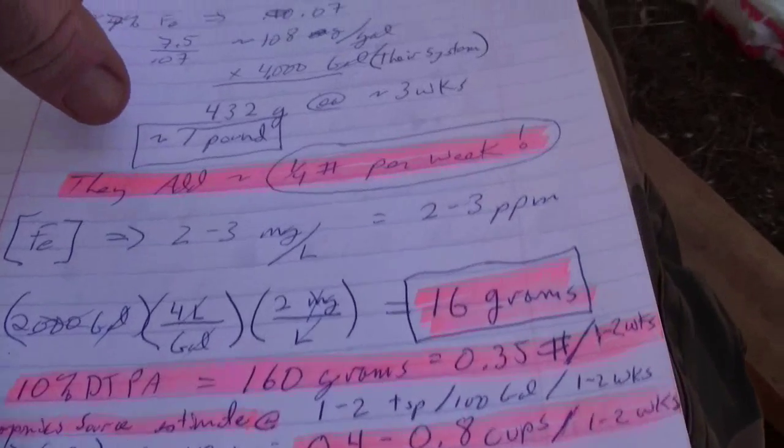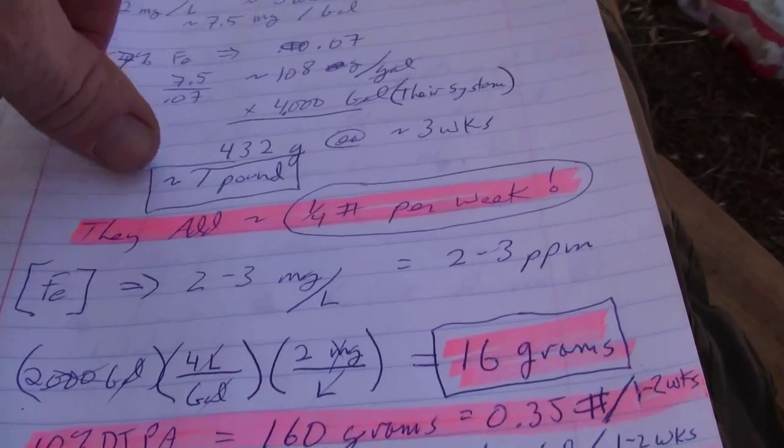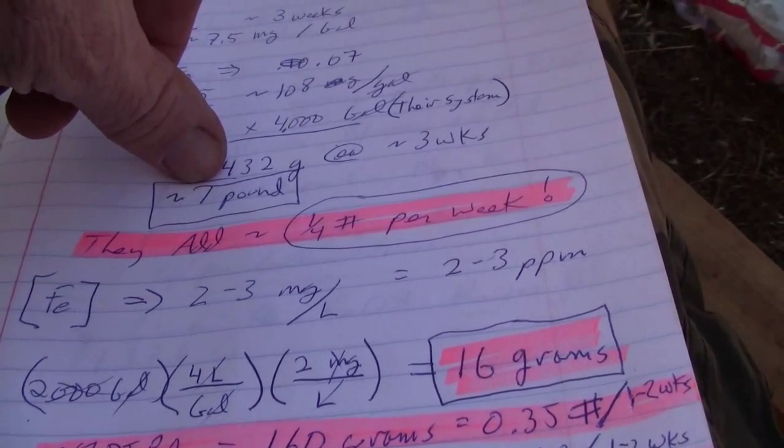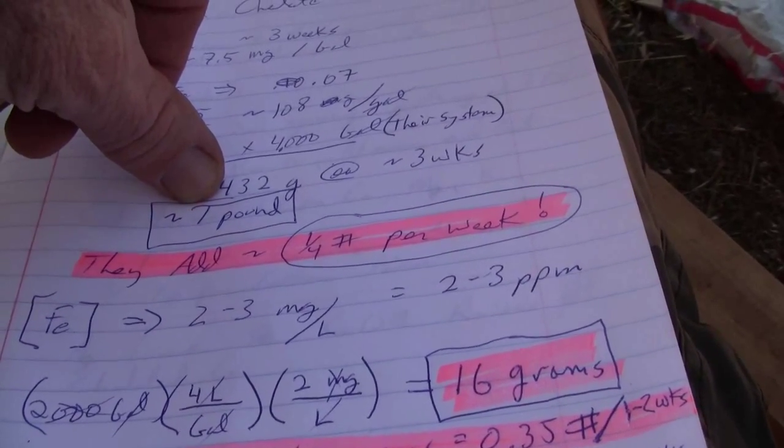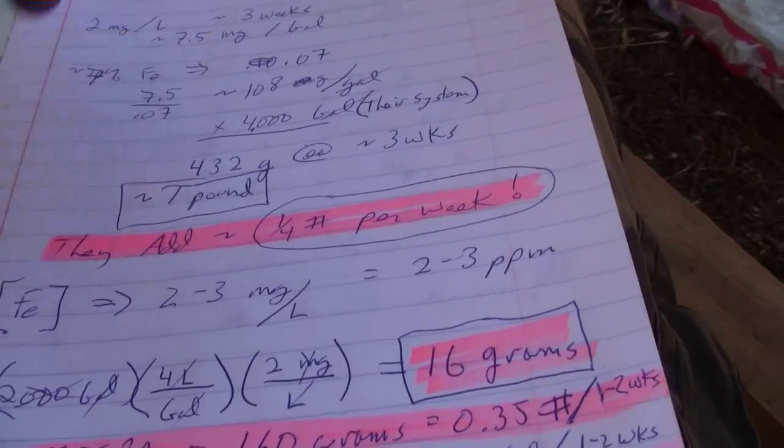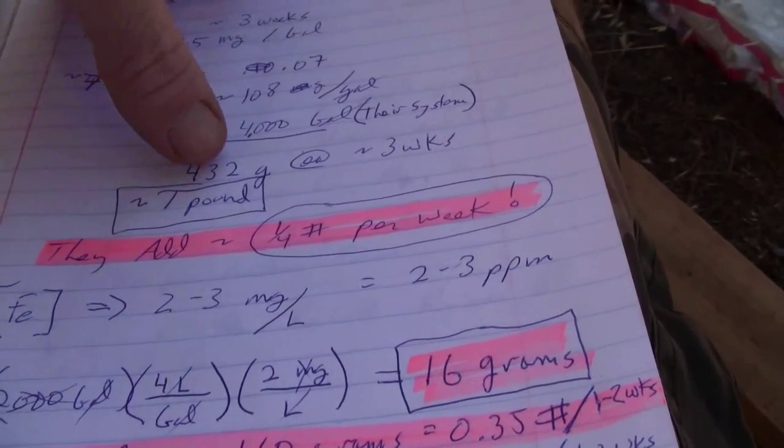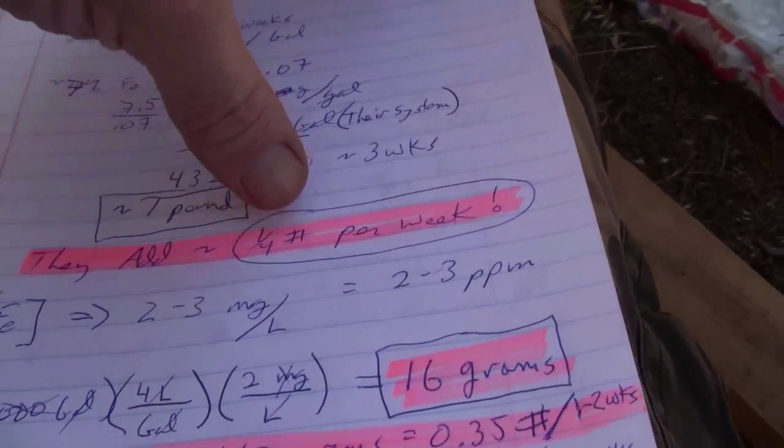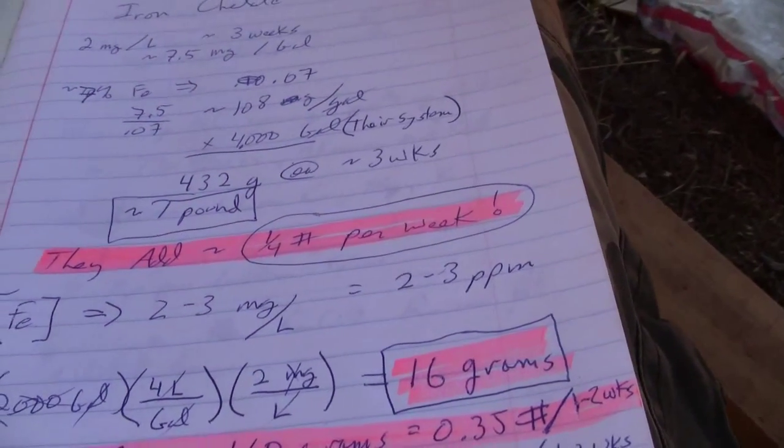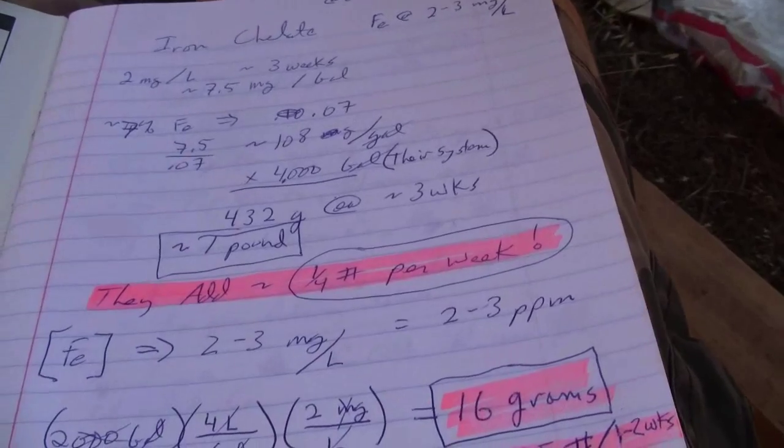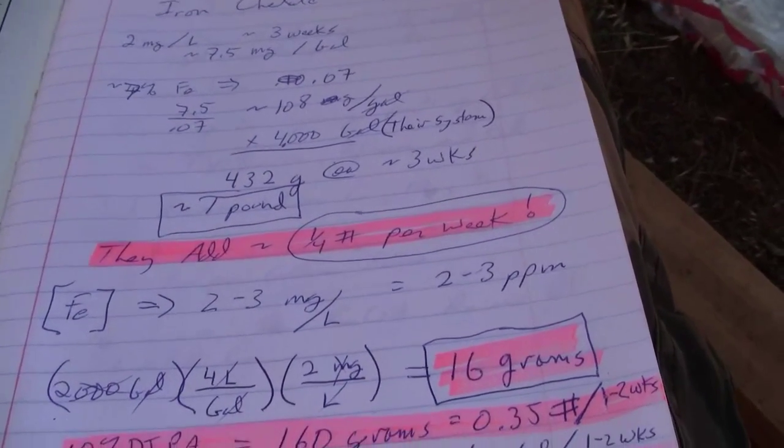Interestingly, using Aquaponics Source's estimation gets me the amount that Bright Agrotech actually adds to a system that's twice as large as mine. Their calculation came out that they should be adding about a pound every three weeks, so that would be a third of a pound a week. They actually add a quarter of a pound a week.